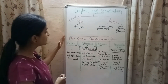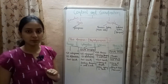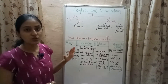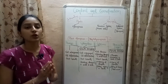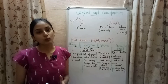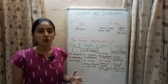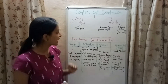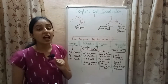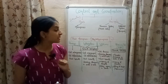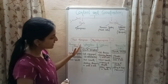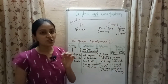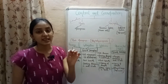In plants, hormones responsible for control and coordination are known as phytohormones. They are of four types: auxins, gibberellins, cytokinins, and abscisic acid, which is known in short as ABA.